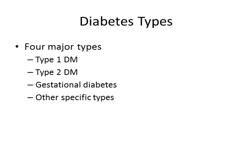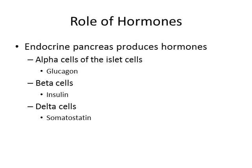Some key hormones to understand are glucagon, insulin, and somatostatin. Glucagon is produced by the alpha cells and responds to a drop in blood glucose levels — it raises blood glucose when needed. Beta cells produce insulin and respond to changes in blood glucose, decreasing blood glucose levels. Delta cells produce somatostatin, which assists in regulating insulin and glucagon. These are all secreted into the bloodstream and respond accordingly.